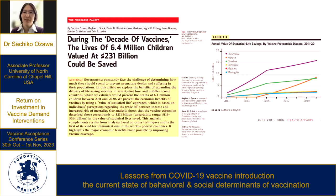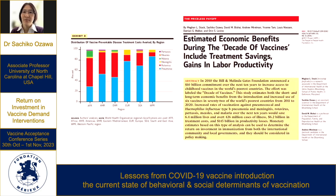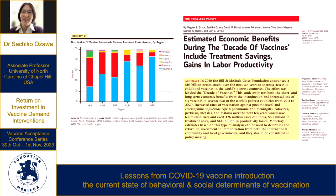We then moved on from this value of statistical life work to also estimate the cost of illness. This was across the same countries — all the Gavi countries at the time, 73 countries — over the 2000 to 2010 period, looking at the economic benefit of vaccination across the different vaccines. We were targeting six vaccine-preventable diseases for this modeling, starting to generate evidence on the economic benefits of vaccination using different methodologies, whether it's the cost of illness to highlight treatment savings and labor productivity, as well as the value of statistical life.